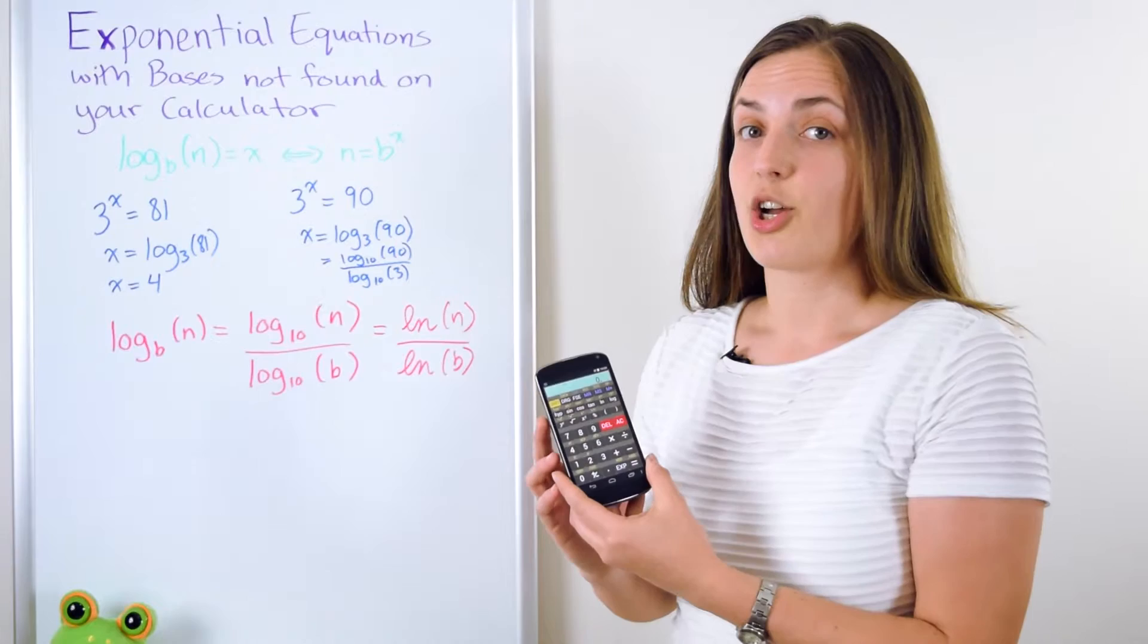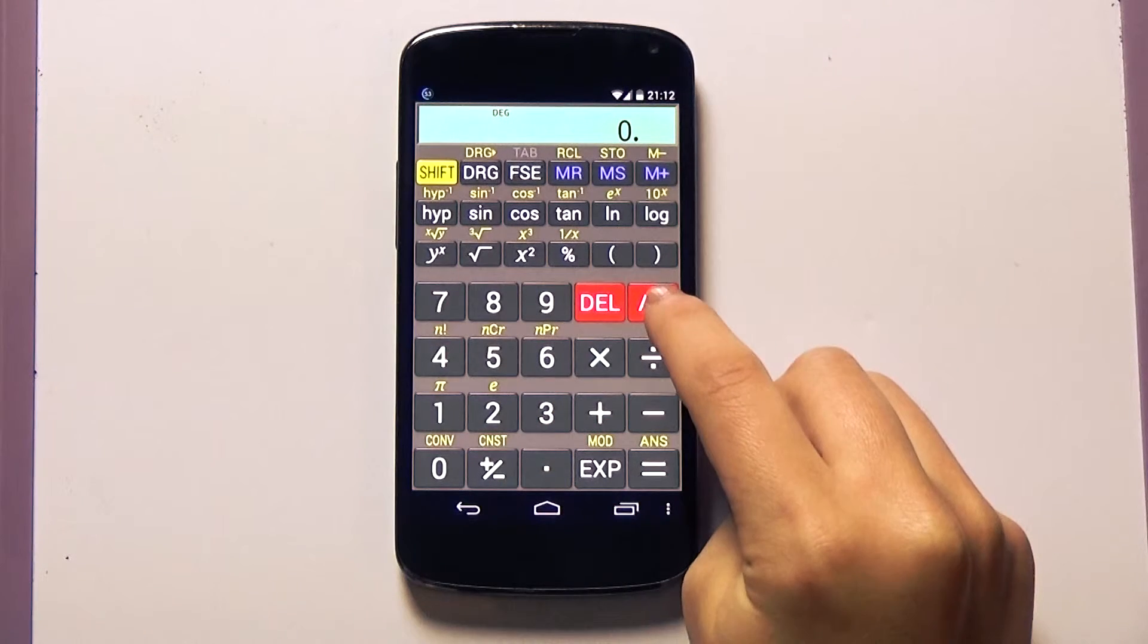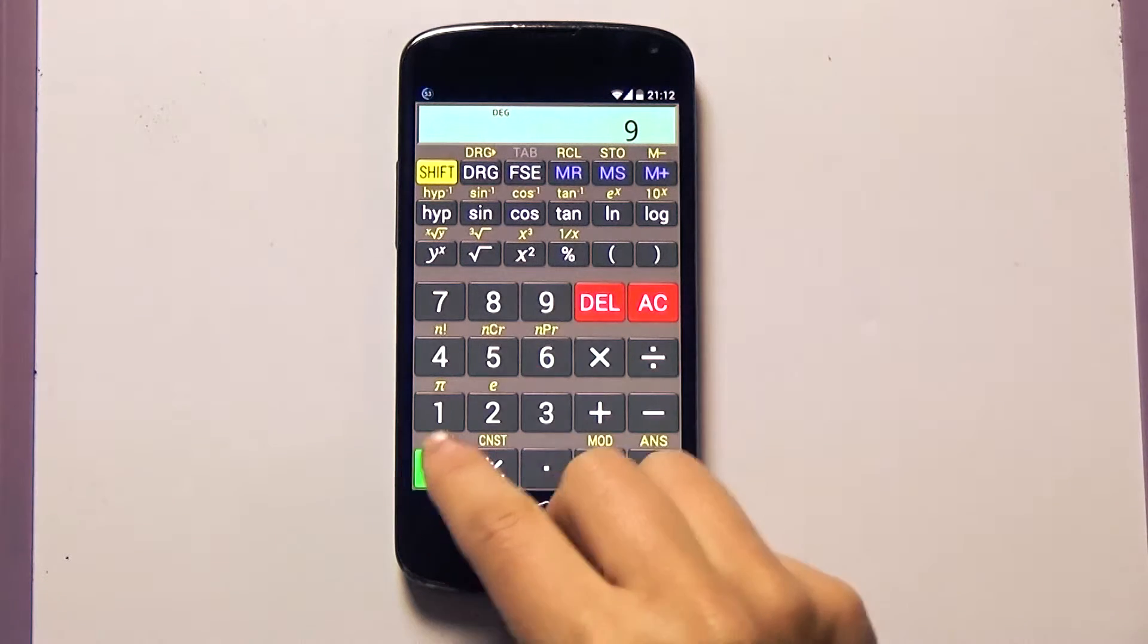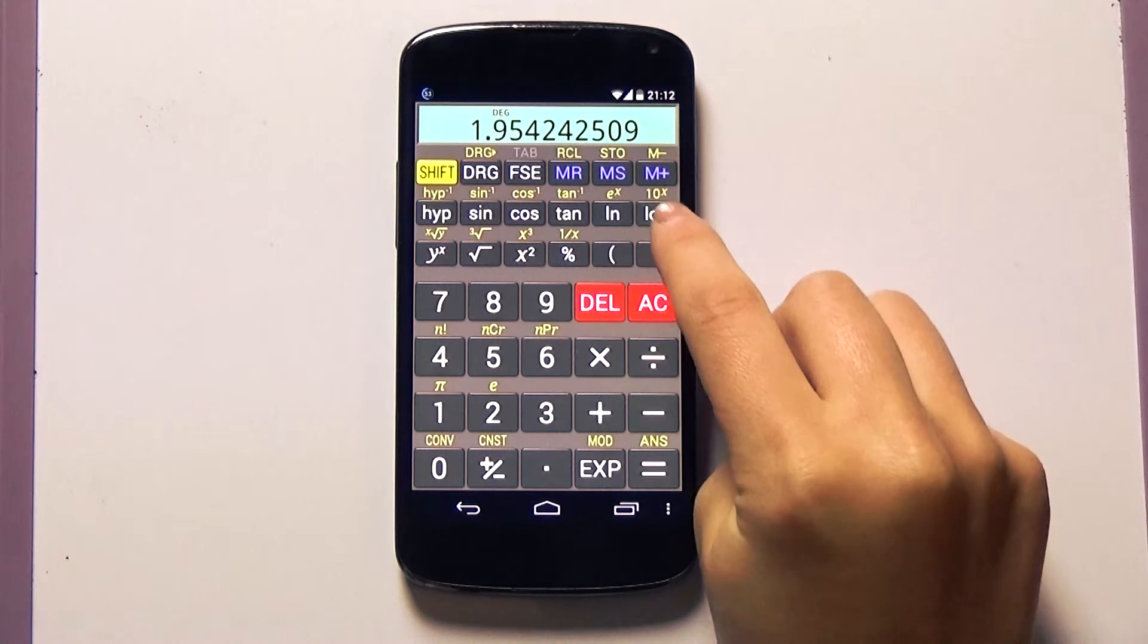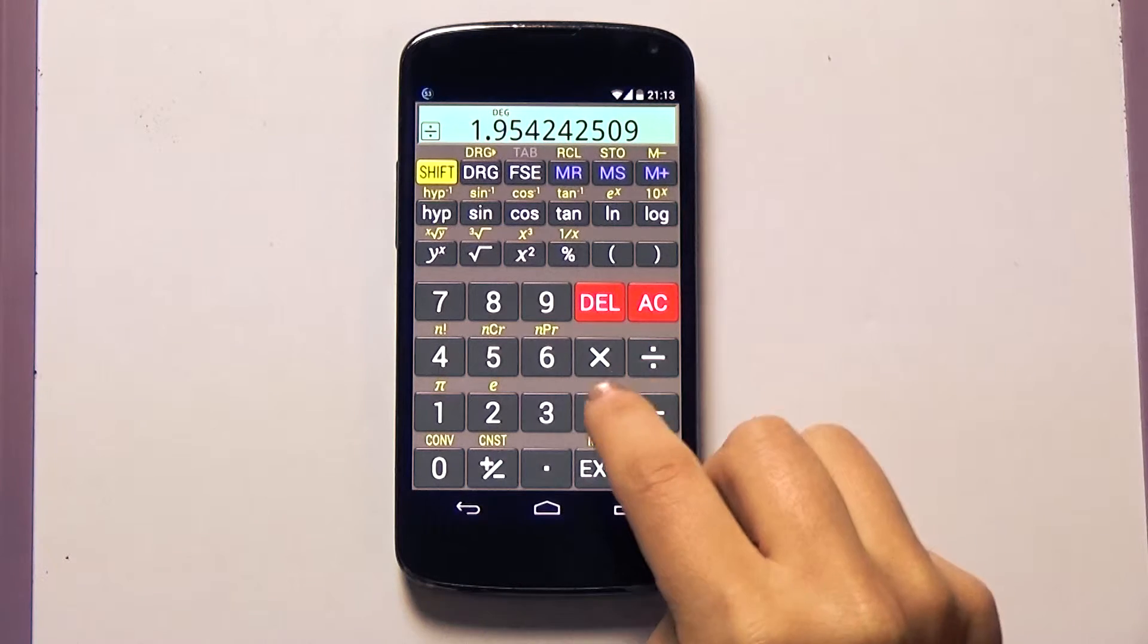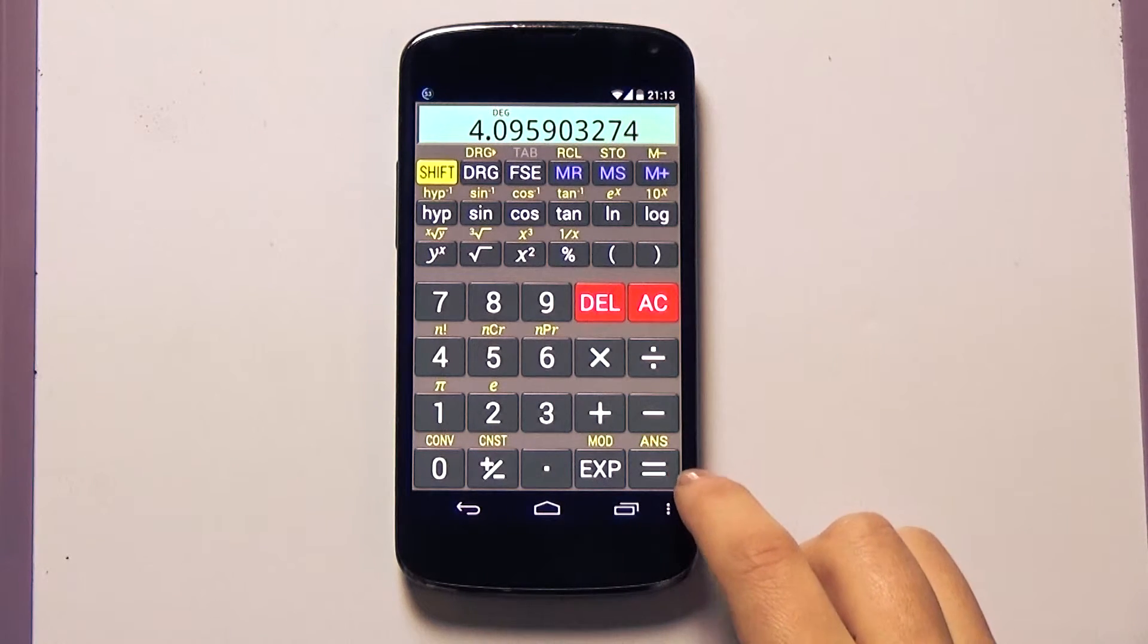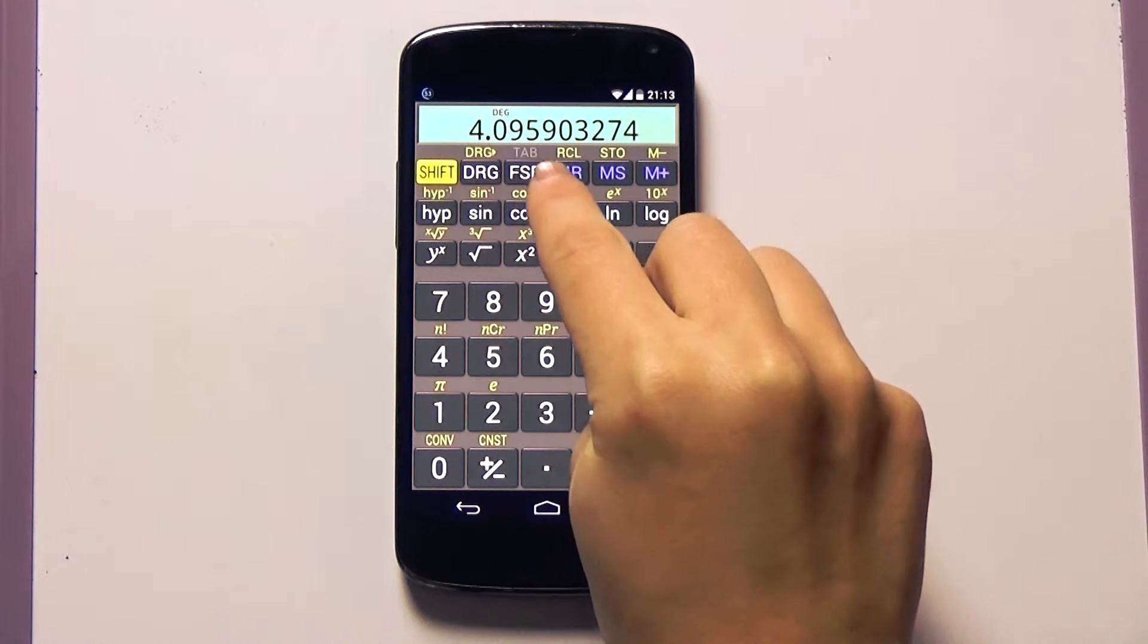So let's check this on our calculator. If we use base 10, we'll have log base 10 of 90. So we have to type 90 and then log base 10. Now we divide by 3 log base 10 and we get our answer. Our answer is 4.0959.